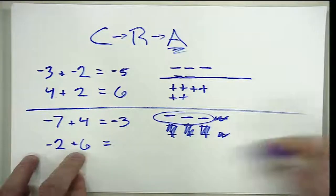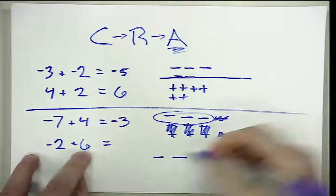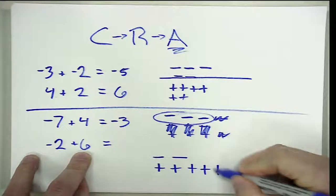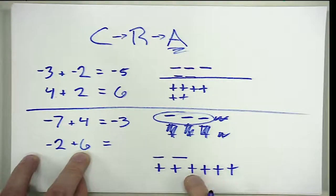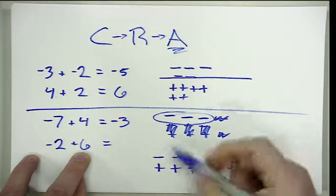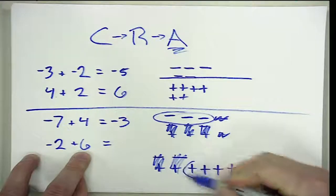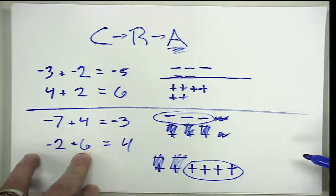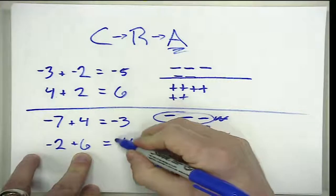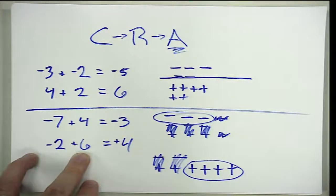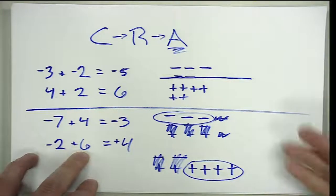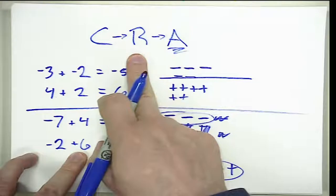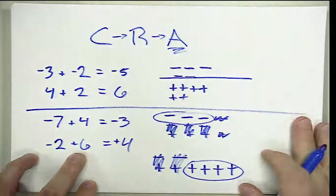The same is true for something like negative 2 plus 6: two negatives with six positives — that's two, three, four, five, six. Adding positives to negatives creates zero pairs; when they cancel we're left with the difference, which is four. Because we had more positives to begin with, we're left with four positives, or a sum of positive 4. This helps us establish the rules as we model from concrete to representational and ultimately be able to live in the abstract.